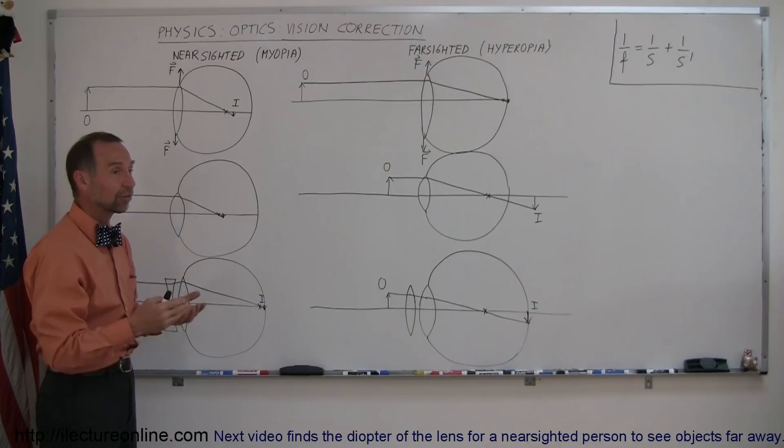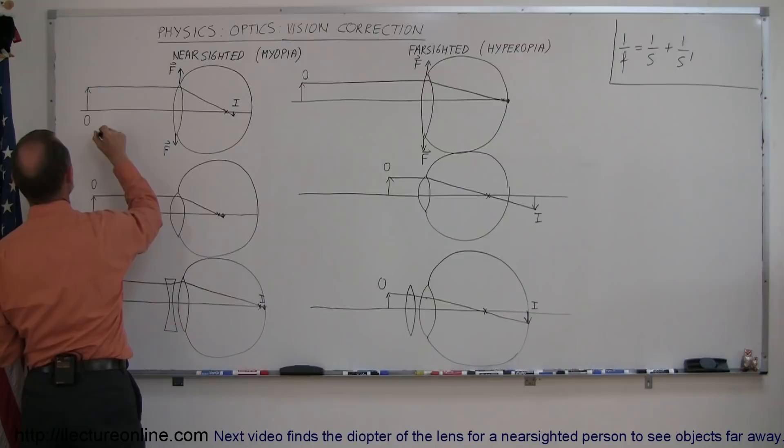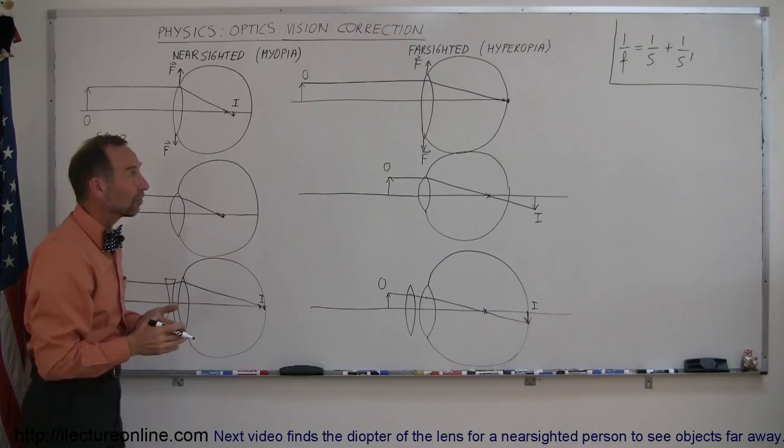Let's say that you're trying to look at something that's very far away, so this object, and so we could say that the distance to the object is approximately infinity. Of course it's not really infinity, but things that are really far away, in a way when we use the lens equation act as if it's at infinity.